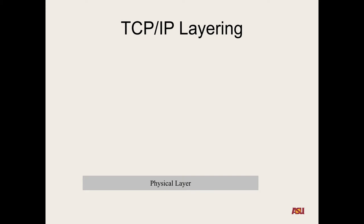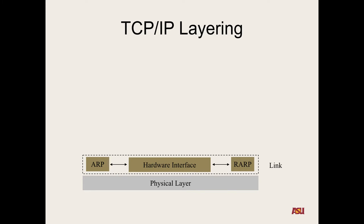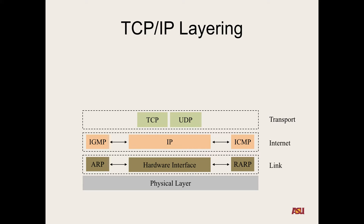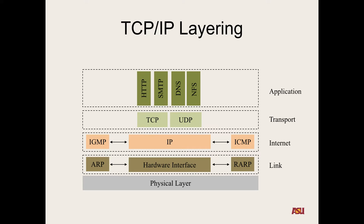To think about this as a layering system: at the bottom is the physical layer, communicating from one node to the next. Above that the link layer, dealing with hardware interfaces. Then the internet layer, which is IP. Then the transport layer. And finally, on top, the applications we all know: HTTP, SMTP, DNS, NFS. The point is that as a programmer you don't have to worry about the link level — whether someone is on Ethernet or Wi-Fi — as long as you can successfully send data from one computer to another.